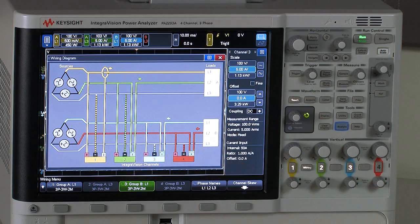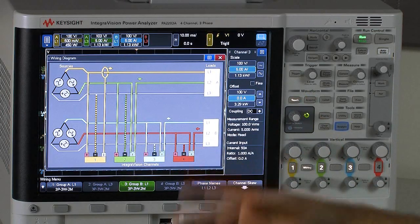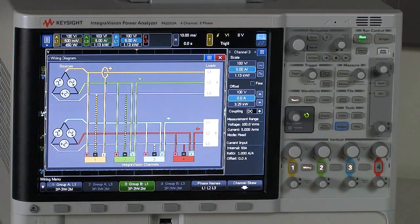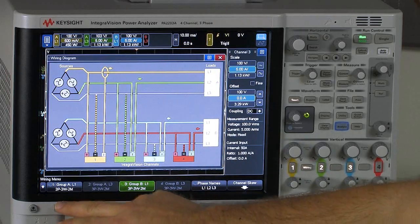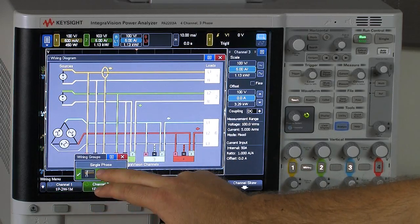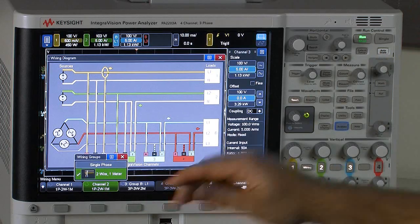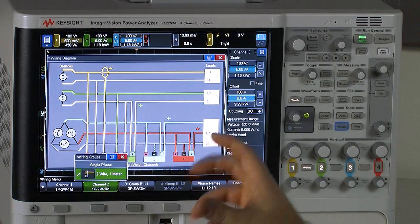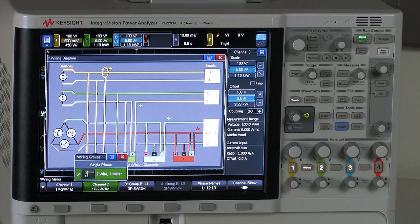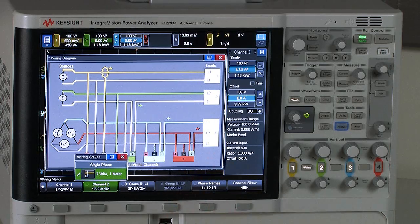Another example would be a solar inverter with dual maximum power point tracking where I could configure channels one and two sort of as DC inputs and then have the channels three and four grouped together for a three-phase two-meter measurement.